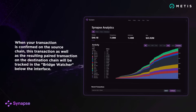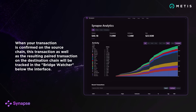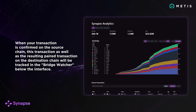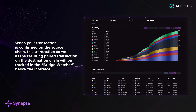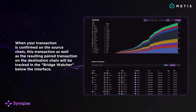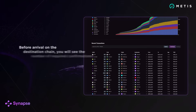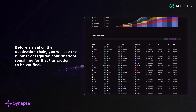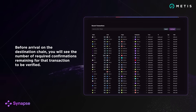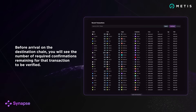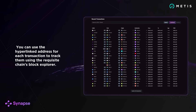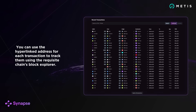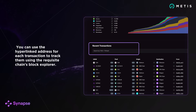When your transaction is confirmed on the source chain, this transaction as well as the resulting paired transaction on the destination chain will be tracked in the bridge watcher below the interface. Before arrival on the destination chain, you'll see a number of required confirmations remaining for that transaction to be verified. You can use the hyperlinked address for each transaction to track them using the requisite chain's block explorer.